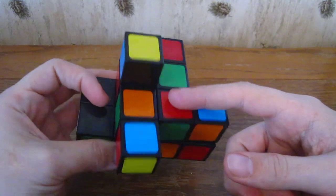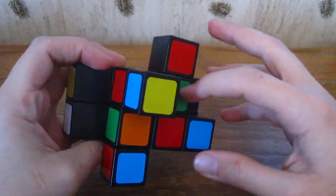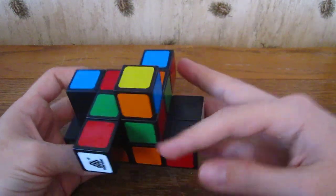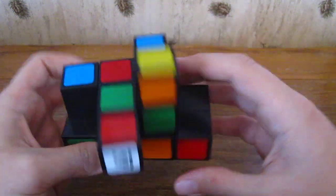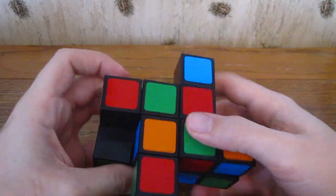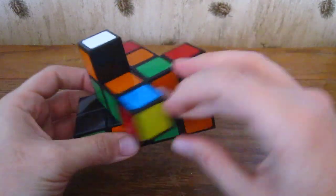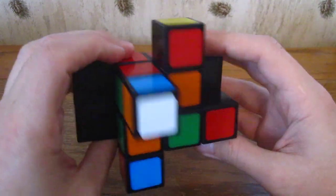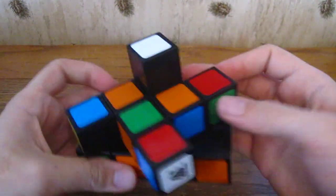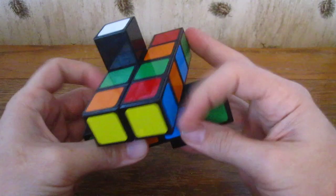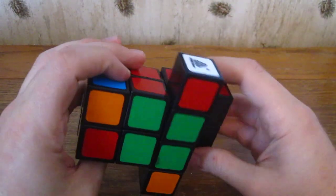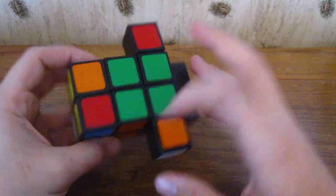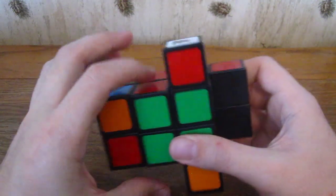I have one green sticker, so it looks like we have a Sune case. Green here, here, and back here. So I just do a Sune. Oh, I messed that up, didn't I? There we go, I'll do a Sune.